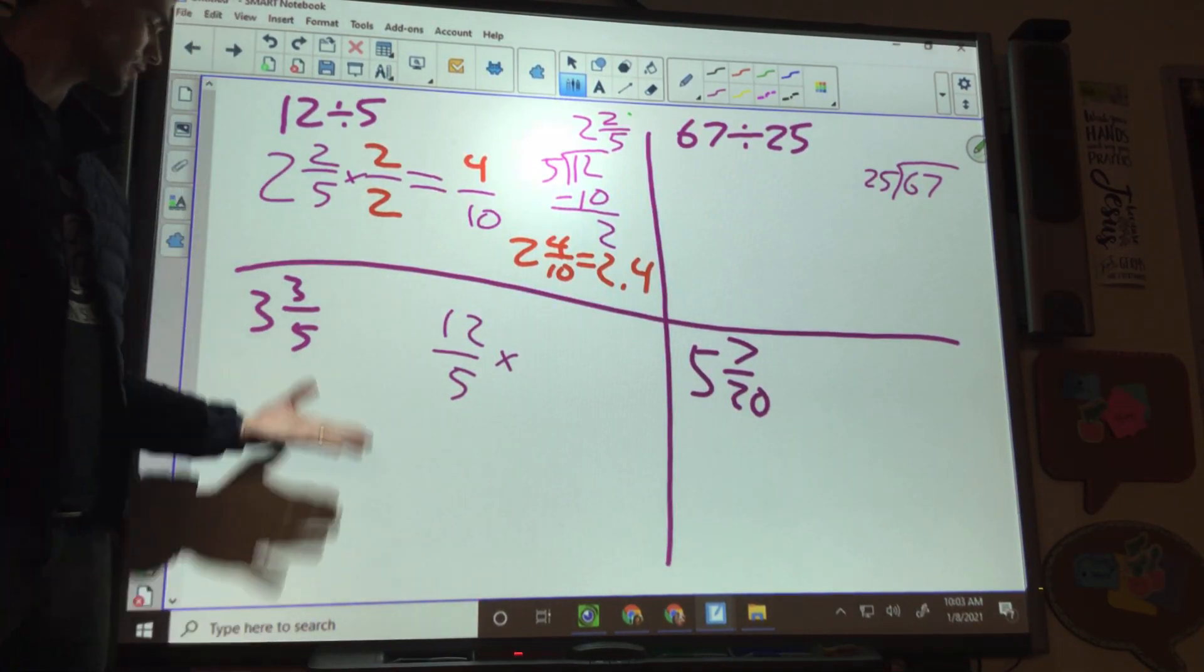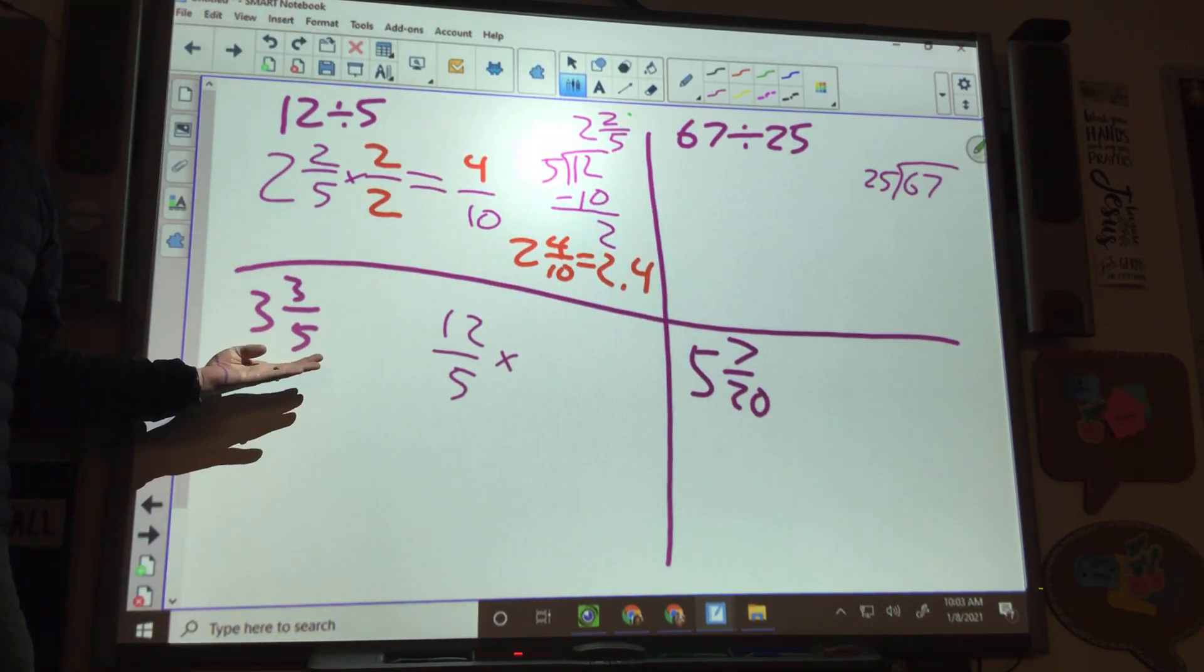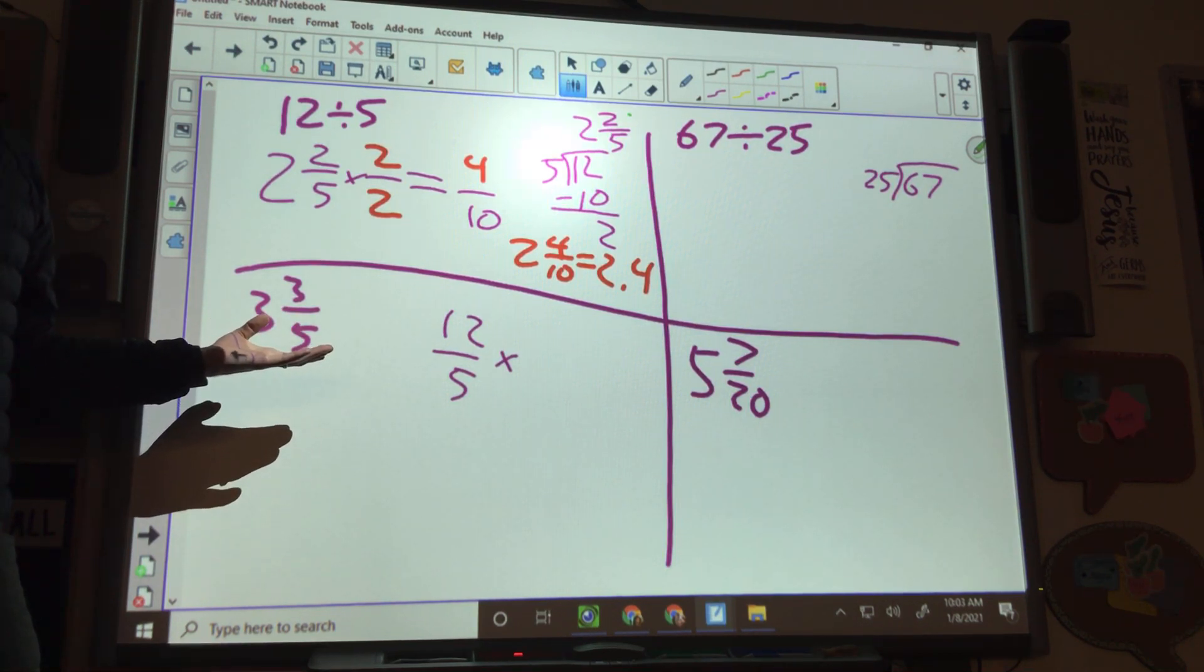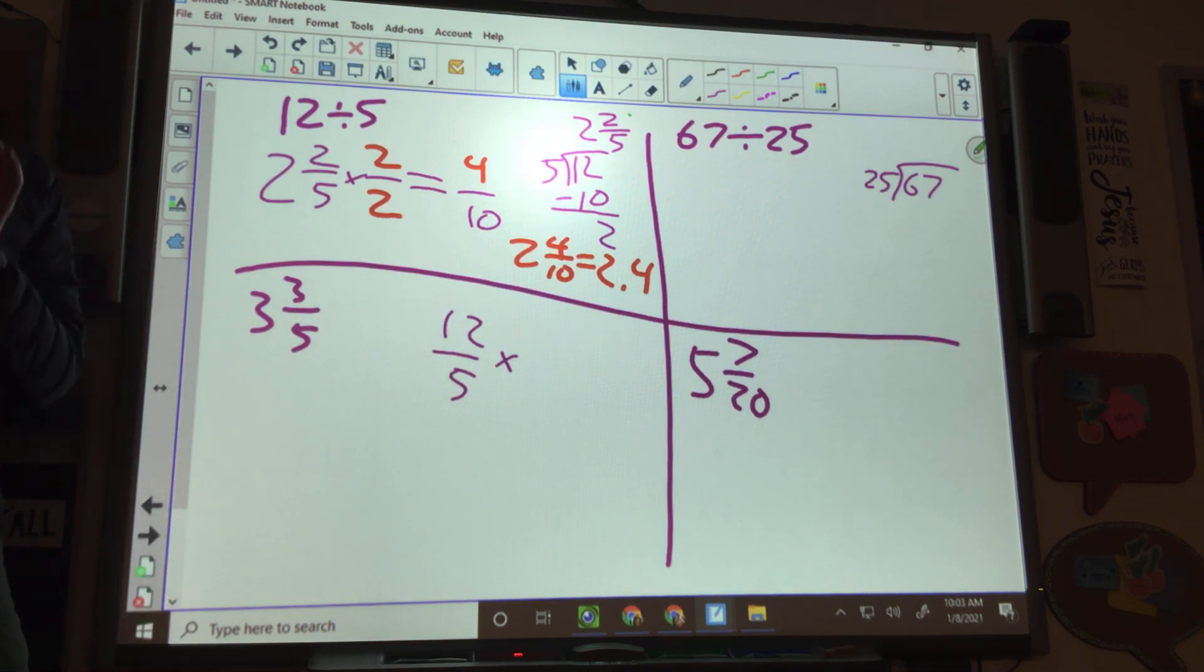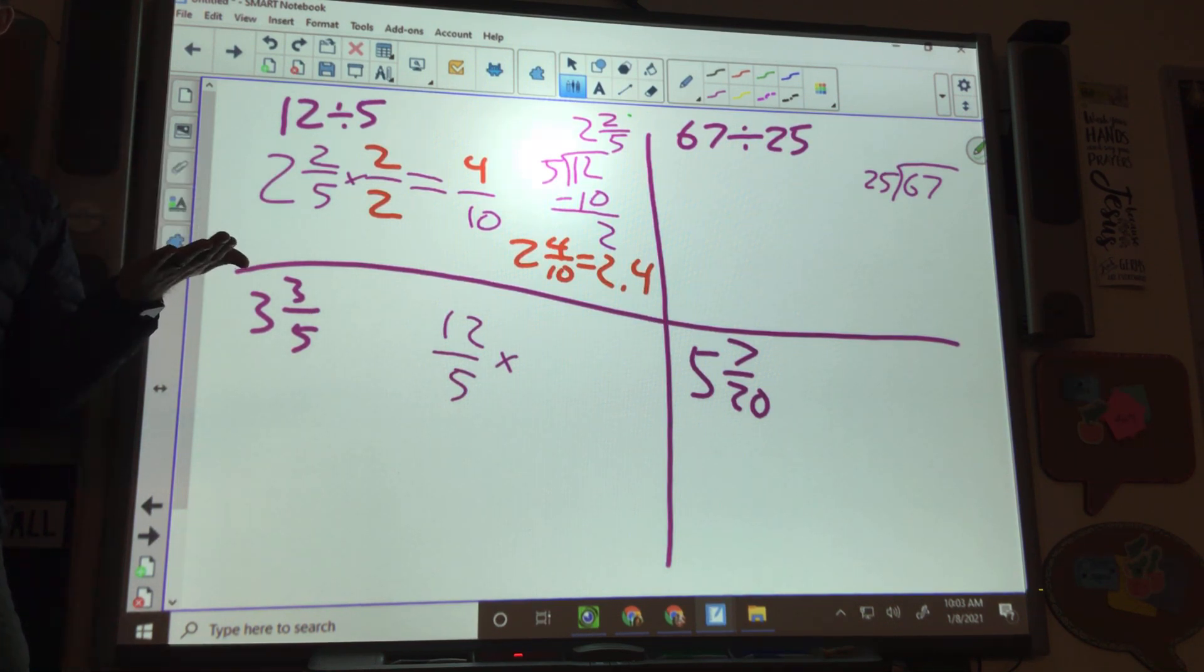All right, this is a what? Mixed number and improper fraction? Mixed number. Mixed number, so do we need what? Number 167 divided by 25. I know, I'm going through the different ones to give you guys examples, because what I thought you all clearly understood, the difference between a mixed number and improper fraction, we did not understand.